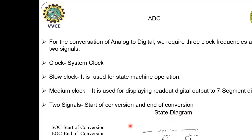Coming to the state diagram, SOC represents start of conversion and EOC represents end of conversion. There are totally 4 states, from 0 to 3. When the start of conversion signal is given, that is when SOC equals 1, it moves into the first state; otherwise it remains in the same position. In state 1, it will check for end of conversion. If EOC equals 1, it will remain in the same state.